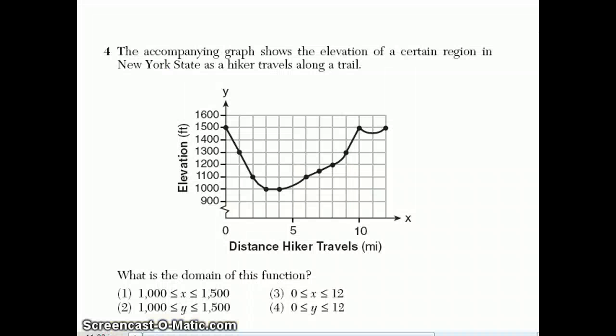Moving on to question number 4. It says here, the accompanying graph shows the elevation of a certain region in New York State as a hiker travels along a trail, and they want to know what's the domain. Well, the domain are all the x values of all the points on the graph. So 0 is the leftmost x value, and 12 is the rightmost x value. That's why this one is choice 3: 0 ≤ x ≤ 12. If they ask for the range, that would be the y values, which is 1,000 up to 1,500. That would be choice 2.